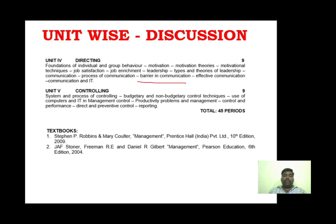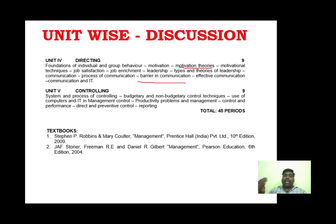Unit 4 covers motivation theory, barriers, and communication. The key set for Unit 4 is motivation theory, leadership, and communication. If you cover communication and motivation, you will definitely get one question. Unit 5 is about controlling — management control, controlling techniques including budgetary and non-budgetary control techniques.